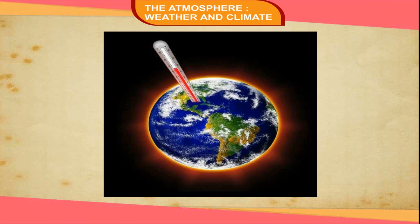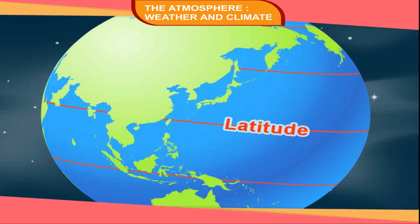Factors Affecting Temperature. Temperature varies from place to place on earth, and there are factors which control its distribution. Latitude: The angle of incidence of sun rays is not the same everywhere due to the spherical shape of the earth. The angle of incidence is high on and around the equator and decreases towards the poles. This is why places near the equator have high temperatures, and as we move towards the poles, temperatures decrease. As we move away from the equator, sun rays become increasingly slanted, spreading heat over a larger area.